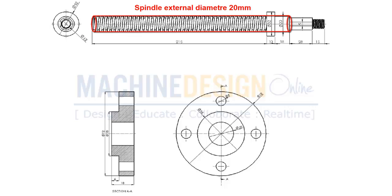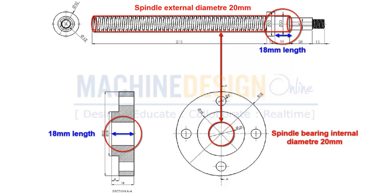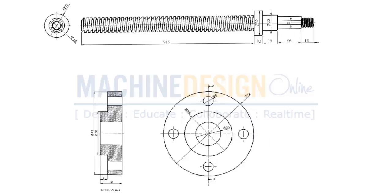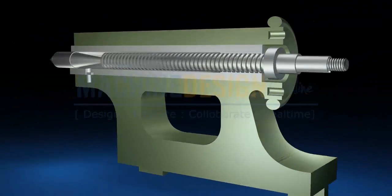Spindle external diameter 20mm is matching with the spindle bearing internal diameter. Also 18mm length is matching. Let's mount spindle bearing on spindle.